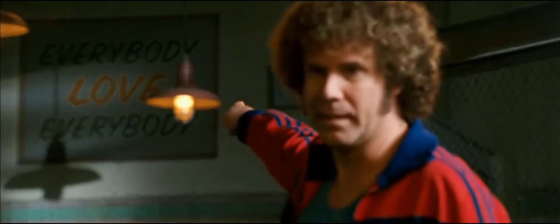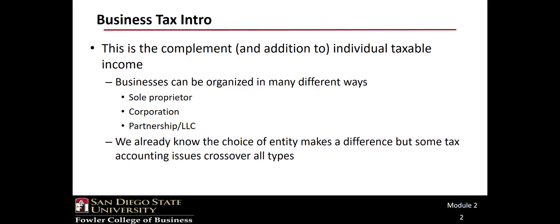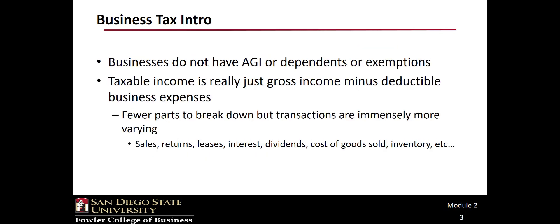This chapter represents the complement to our coverage of individual taxes. Businesses can be organized in a number of different ways: sole proprietor, corporation, partnership, LLC. Entity choice can make a difference to taxes, and we're going to continue to break down entities during the rest of the tax modules. But some tax concepts transcend entity type.